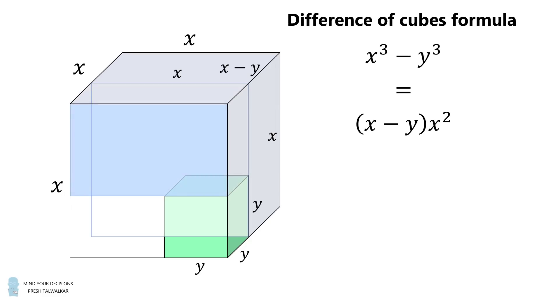Another will have dimensions that are equal to y, x, and x minus y. This will have a volume that's equal to x, y multiplied by the quantity x minus y. And a third will have dimensions that are equal to y, x minus y, and y. The volume of this is equal to y squared multiplied by x minus y.